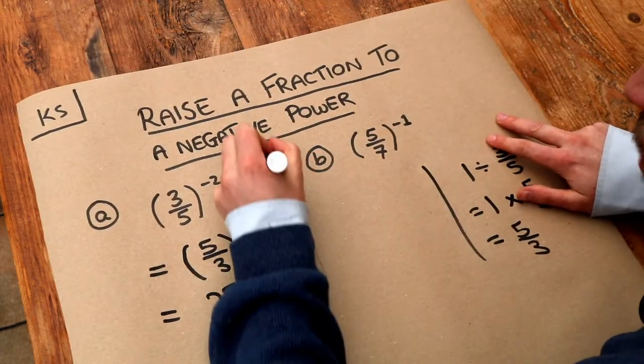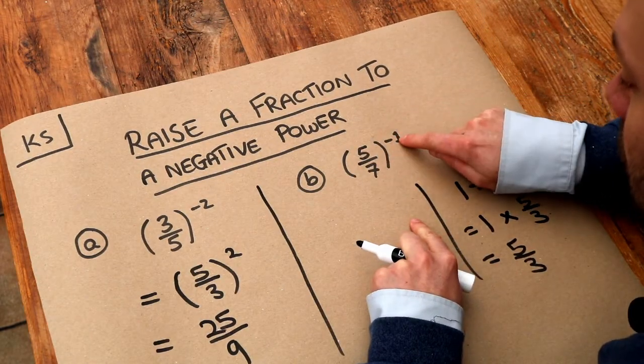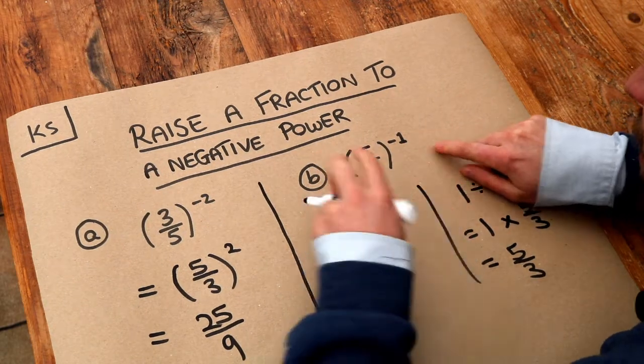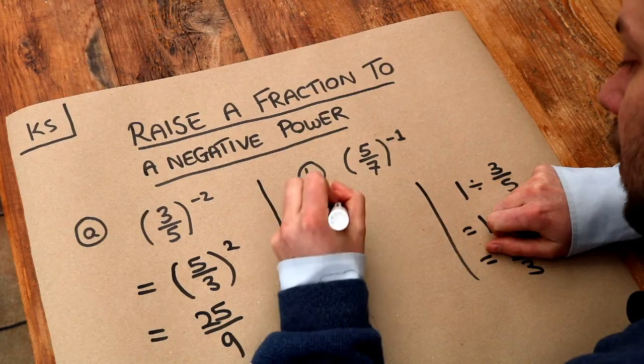What about this second one here? Well if we've got 5 sevenths to the power of minus 1, we deal with this negative in the power, in the index. So it's going to flip this fraction, so we get 7 over 5.